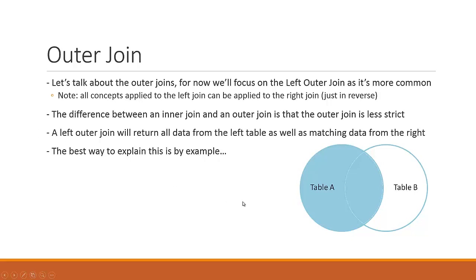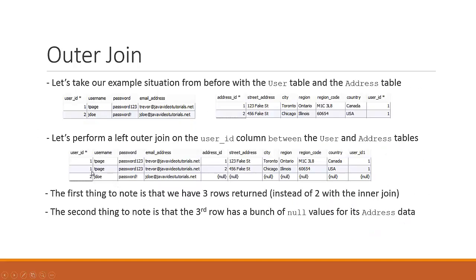The best way to explain this is obviously by example, so let's hop into a real world example. Again, let's take our example from before where we have the same user table and the same address table with the exact same information. We have TPage, JDow, and the rows from the address table that we had before — nothing has changed. So let's pretend we're performing a left outer join on the user ID column between the user and address tables.